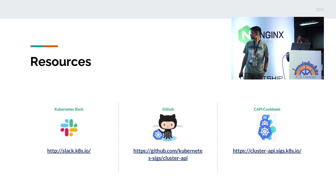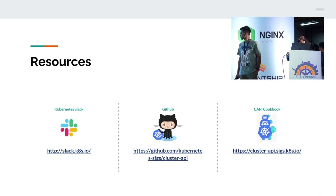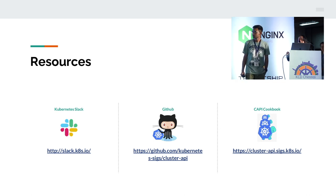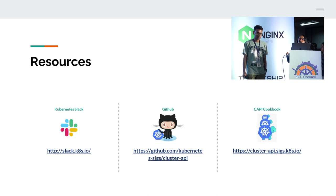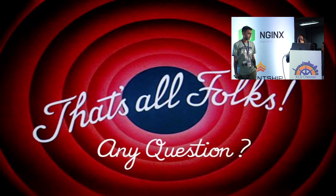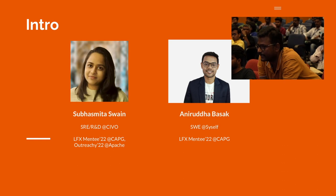Resources: you can join the Kubernetes Slack channel and go to the Cluster API sub-channel to communicate with people or help others. You can visit the Cluster API GitHub repository through the provided link to get the code and navigate to other parts of the project. There's also the CAPI cookbook, which gives you the template on which you can build your own infrastructure.